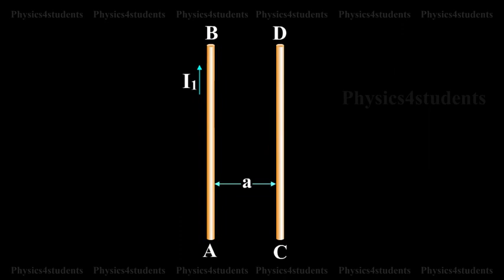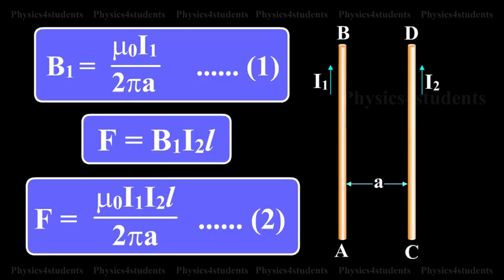They carry currents I1 and I2 respectively. The magnetic induction due to current I1 in AB at a distance A is B1 equals mu0 I1 by 2 pi A. This is equation 1.